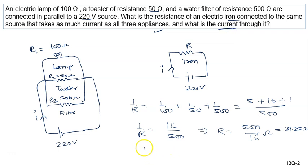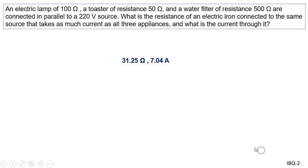Now second part, what is the current through it? I equal to V upon R. Voltage is given to us as 220 volt and resistance is given to us as 500 by 16. We can put 16 here. We will solve it, it is 7.04 ampere. So the answer to the problem is 31.25 ohm and 7.04 amperes.